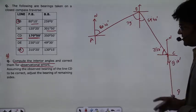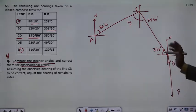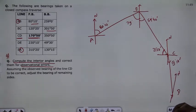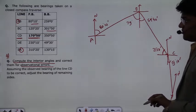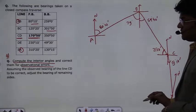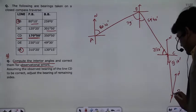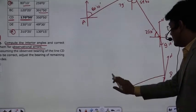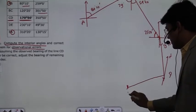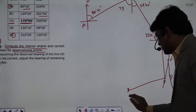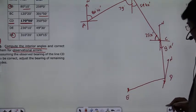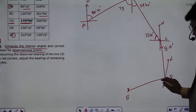The back bearing of CD is 350 degrees. Taking north from D, we will plot point E. The angle from D to E is given in the question as 230 degrees 10 minutes. This is equal to 50 degrees and 10 minutes.